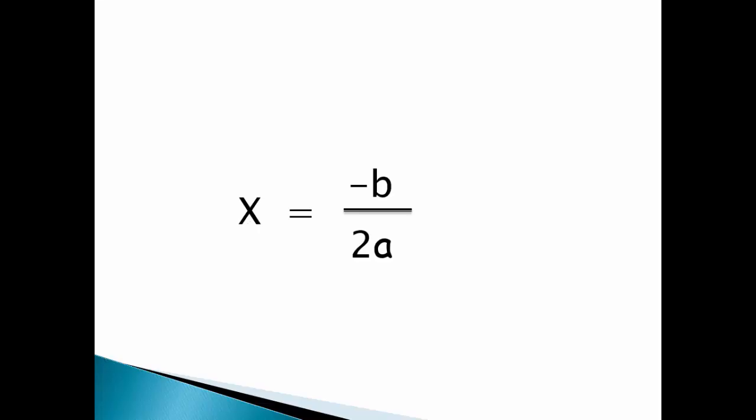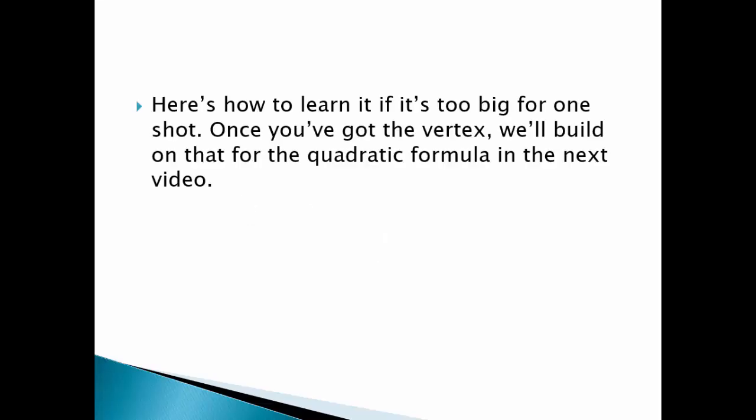Humans vary widely in how big their working memories are, and your working memory will change depending on all kinds of things. Here's how to learn it if it's too big for one shot. Once you've got the vertex, we'll build on that for the quadratic formula in the next video.